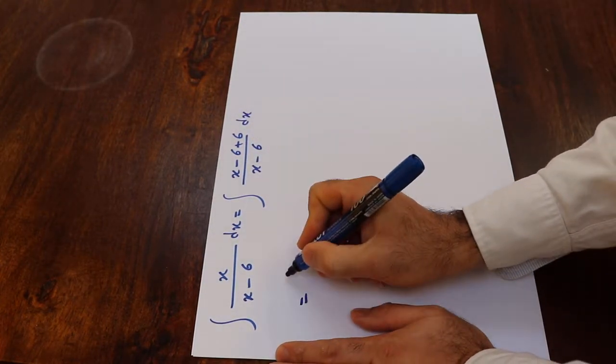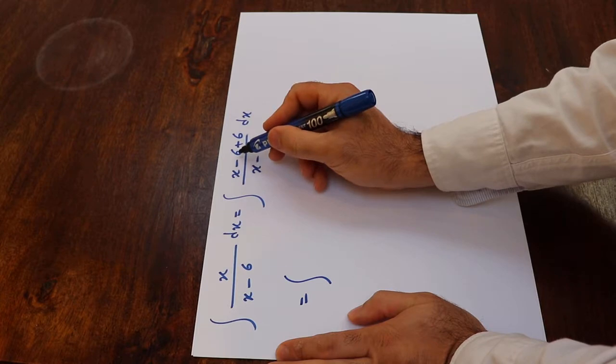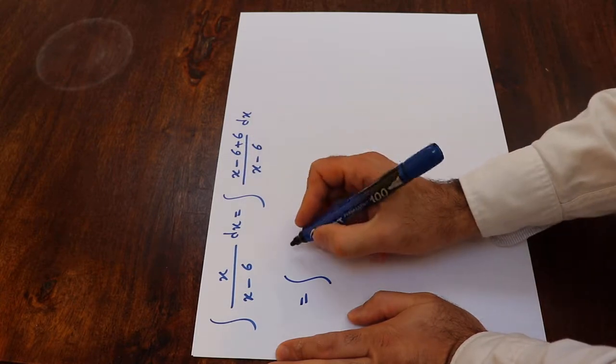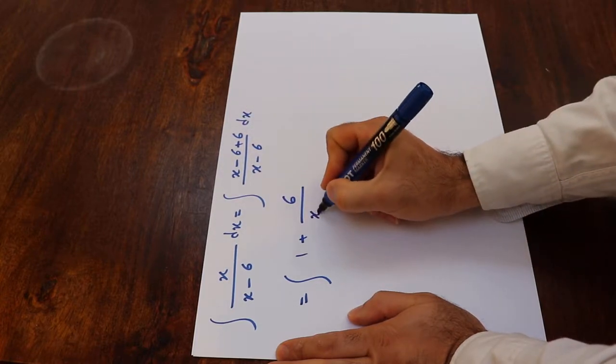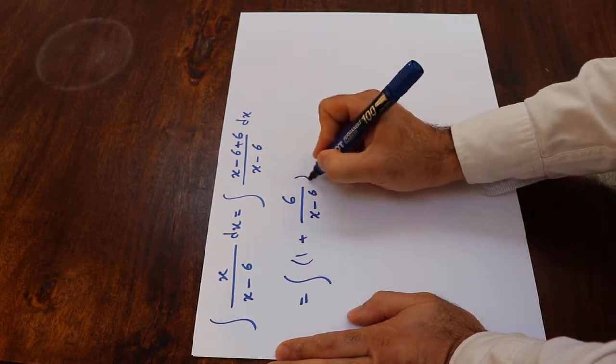Now you can rewrite this as x minus 6 divided by x minus 6 is 1 plus 6 divided by x minus 6 dx.